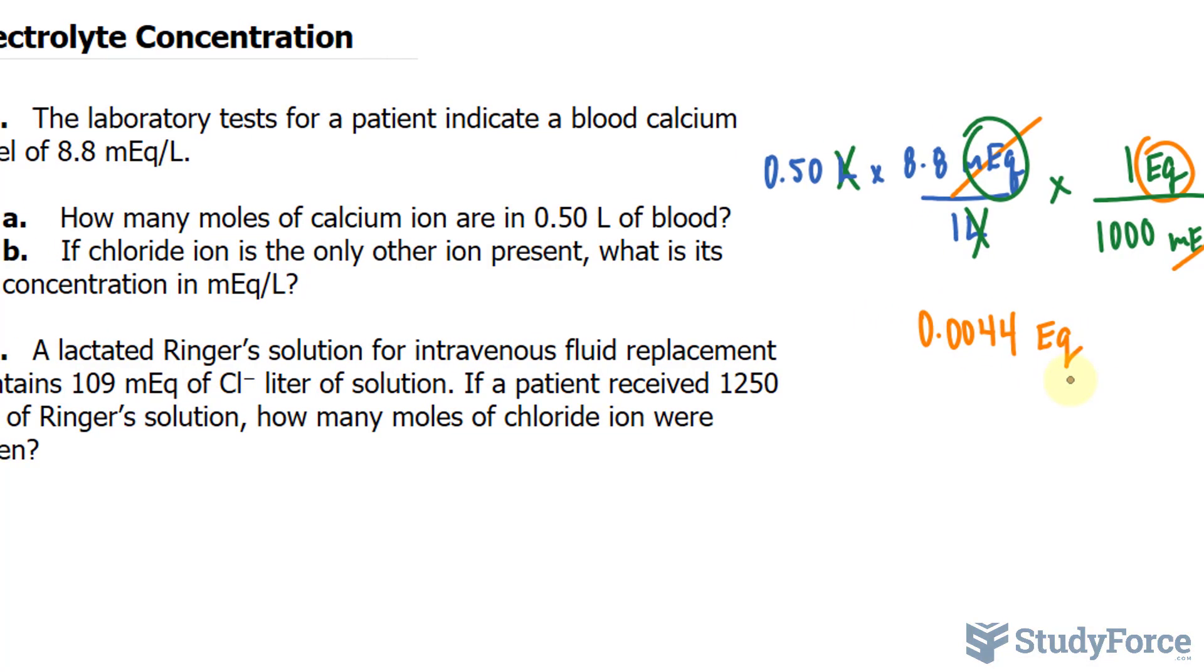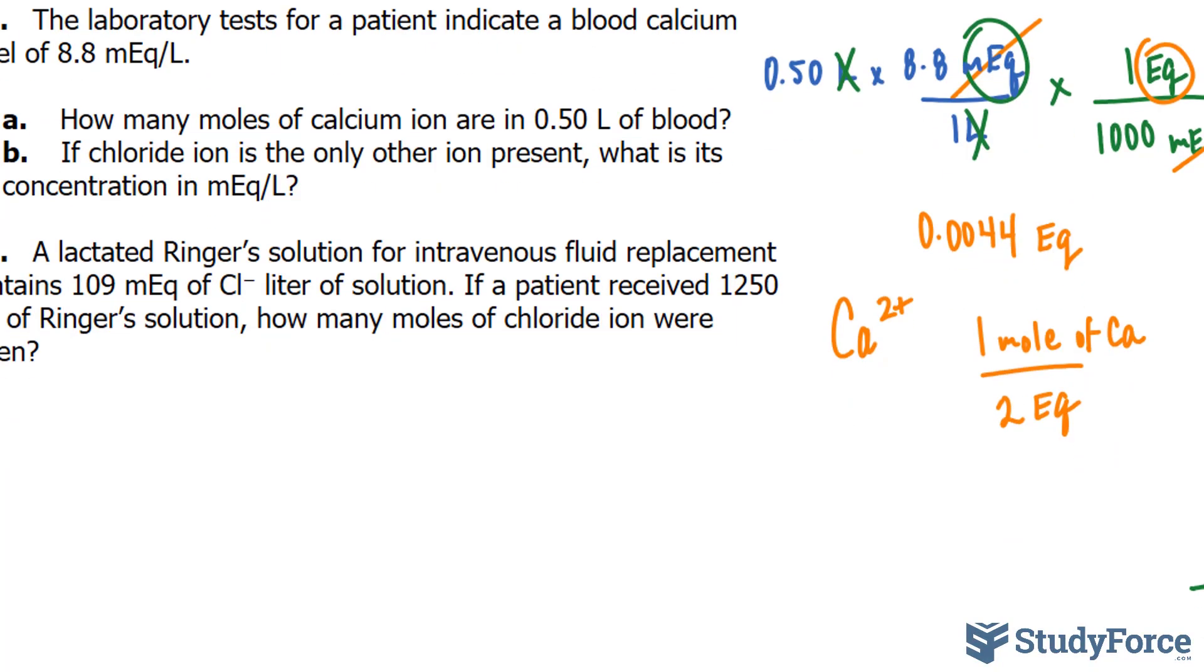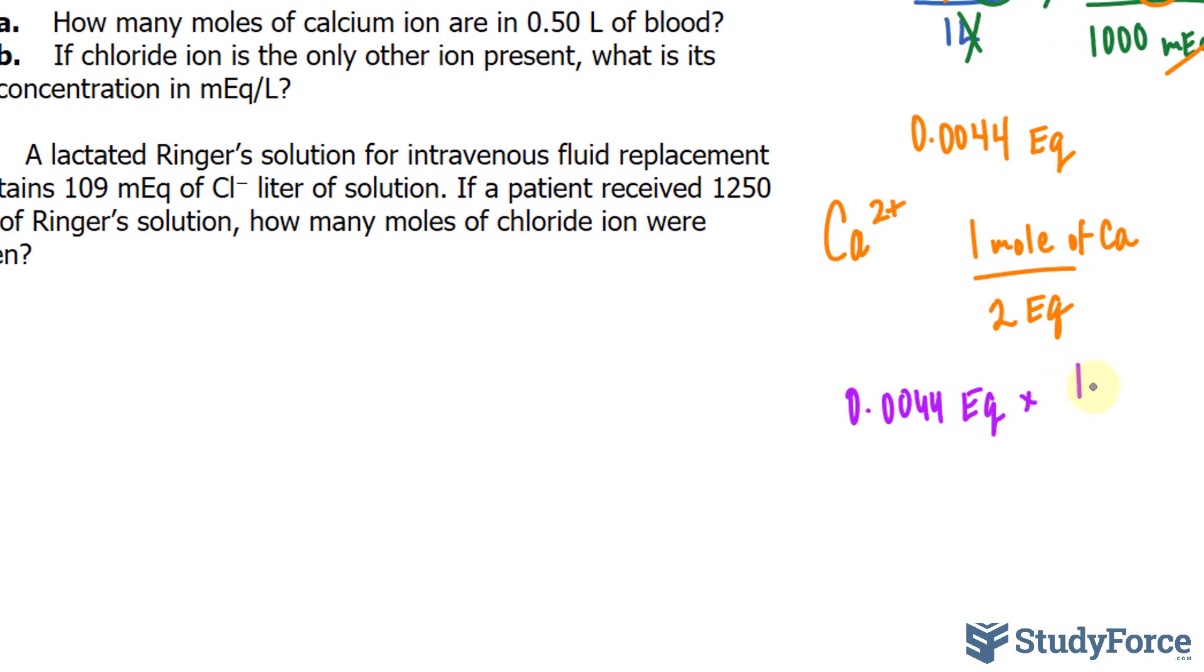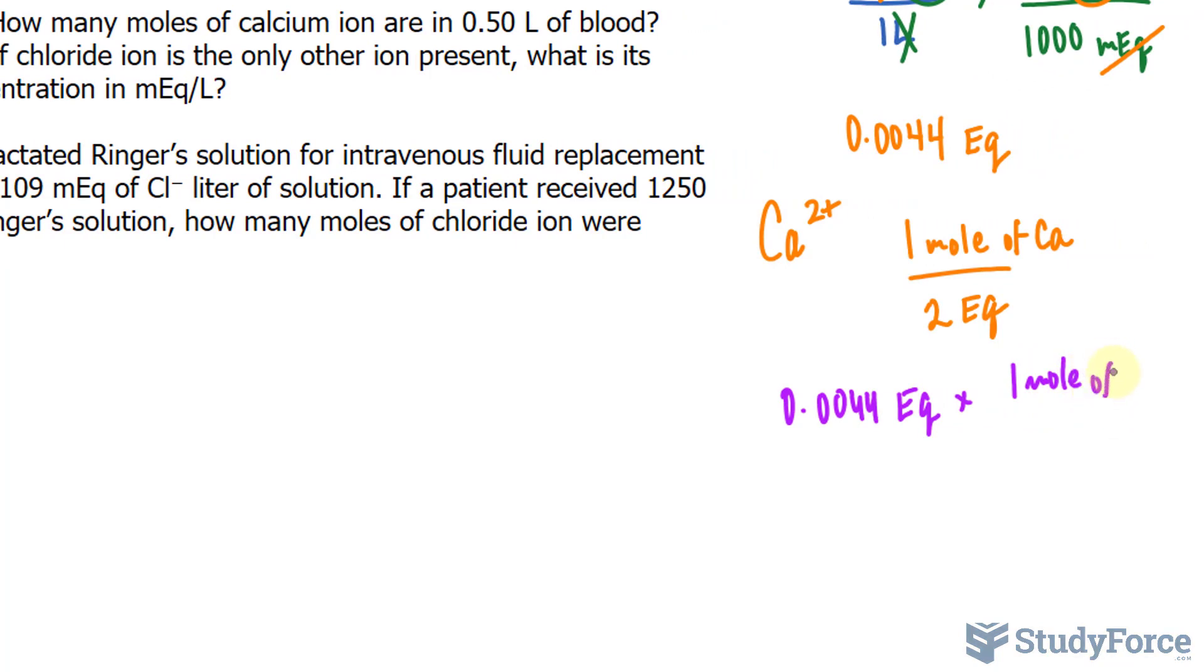As I mentioned earlier on, by definition, to find the amount of moles per equivalent for an electrolyte, such as a calcium ion, recall that calcium is Ca2+, so we can say that 1 mole of calcium is equal to 2 equivalents. At this stage, we can take 0.0044 EQ and multiply it to this conversion ratio, and this will give us the amount of moles of calcium.